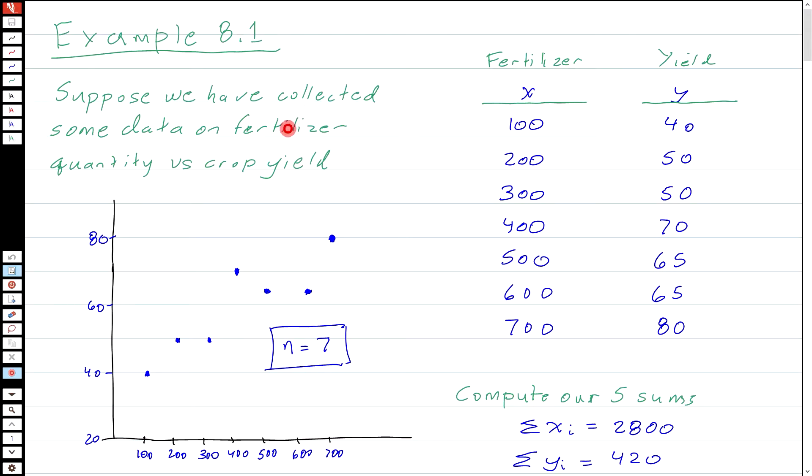So as I mentioned, this is going to be an example. Suppose we have collected some data on fertilizer quantity versus crop yield. And I've shown the data on the right hand side here. So fertilizer quantity, I'm going to call X. And let's suppose it's 100, 200, up to 700 units of fertilizer resulted in yields Y, 40, 50, and so on and so forth, up to 80. So the Ys are really the random parts of this expression.